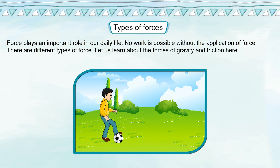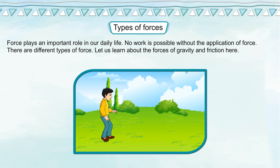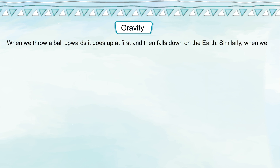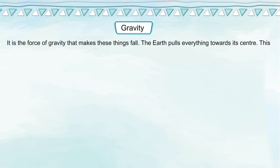There are different types of force. Let us learn about the forces of gravity and friction. Gravity: What happens when you throw a ball up? When we throw a ball upwards, it goes up at first and then falls down on the earth. Similarly, when we release a stone from a height, it falls back on the ground. It is the force of gravity that makes these things fall. The earth pulls everything towards its center. This force exerted by the earth is called the force of gravity.